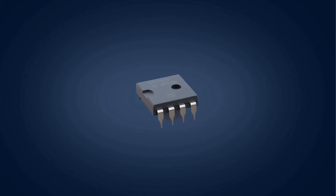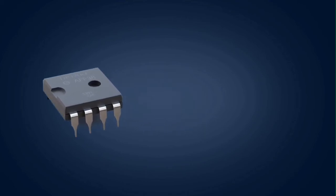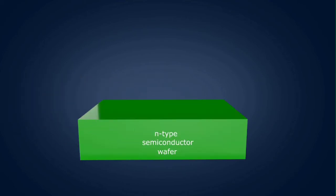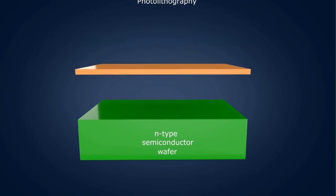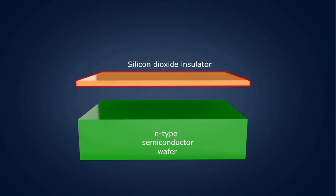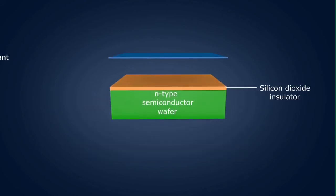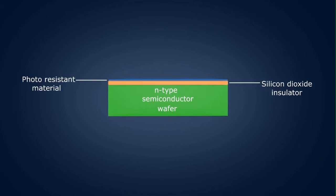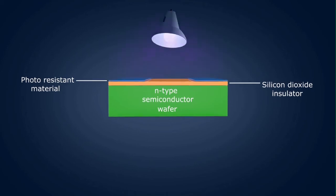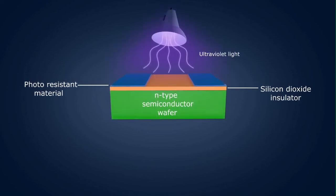To manufacture ICs, firstly a wafer of N-type semiconductor is taken and the photolithography technique is used. In this technique, a layer of silicon dioxide insulator is coated over the wafer, then a thin layer of photoresistive material is placed over the silicon dioxide. After this, masking is done and ultraviolet light is made incident on it. Wherever the light hits the photoresistive portion, it becomes hard and no chemical reaction can take place over it.